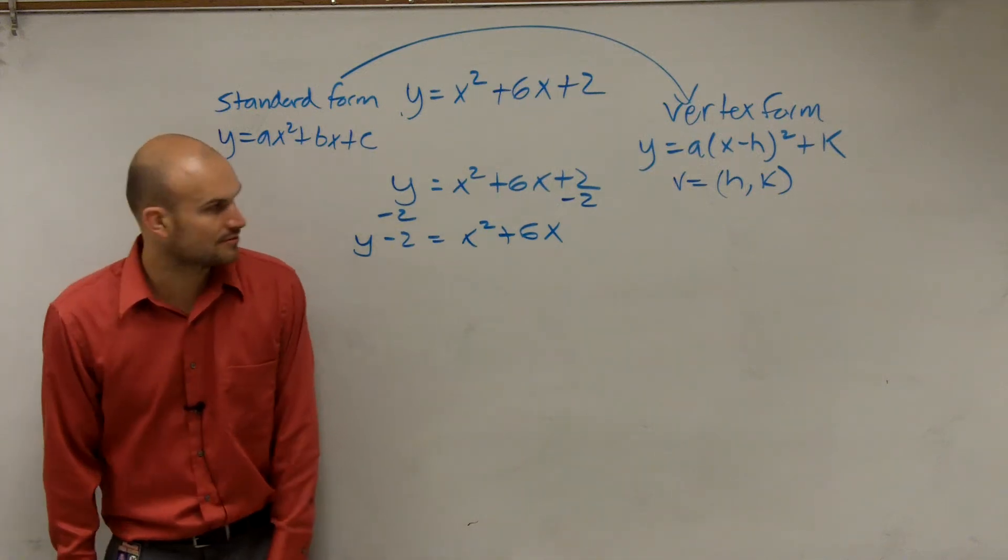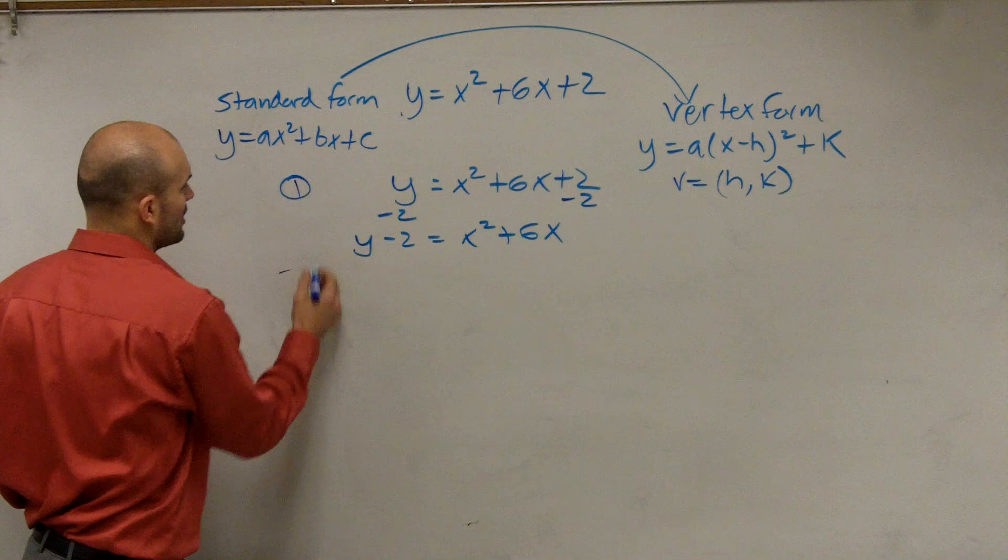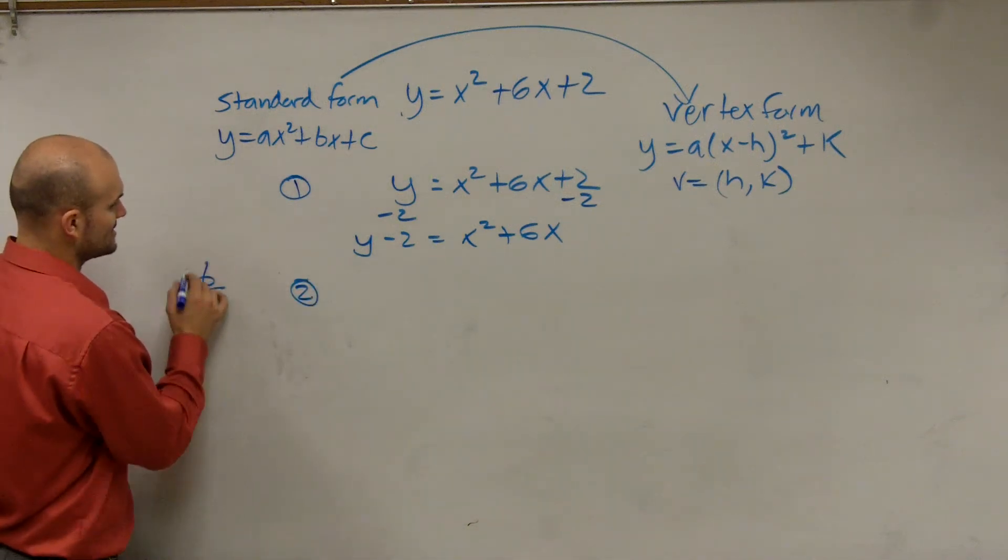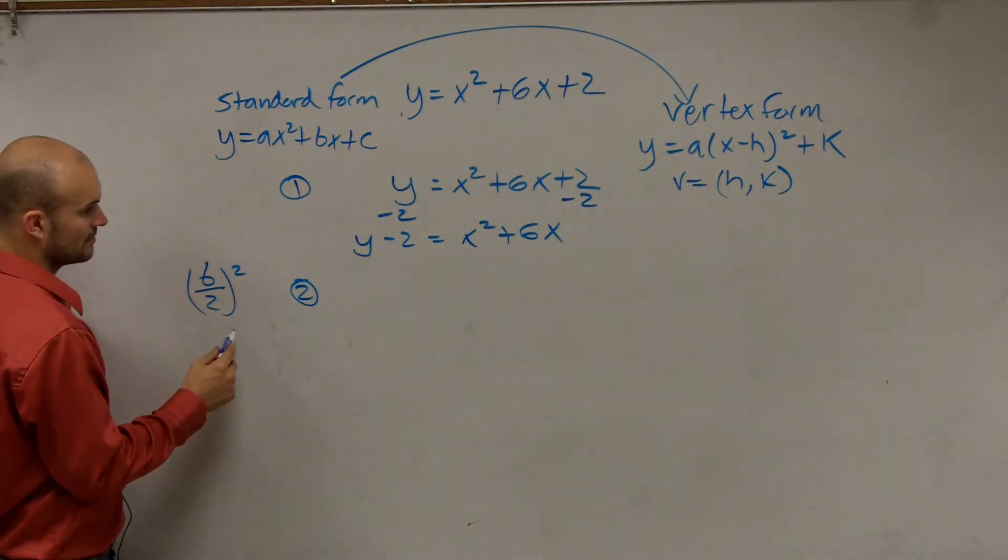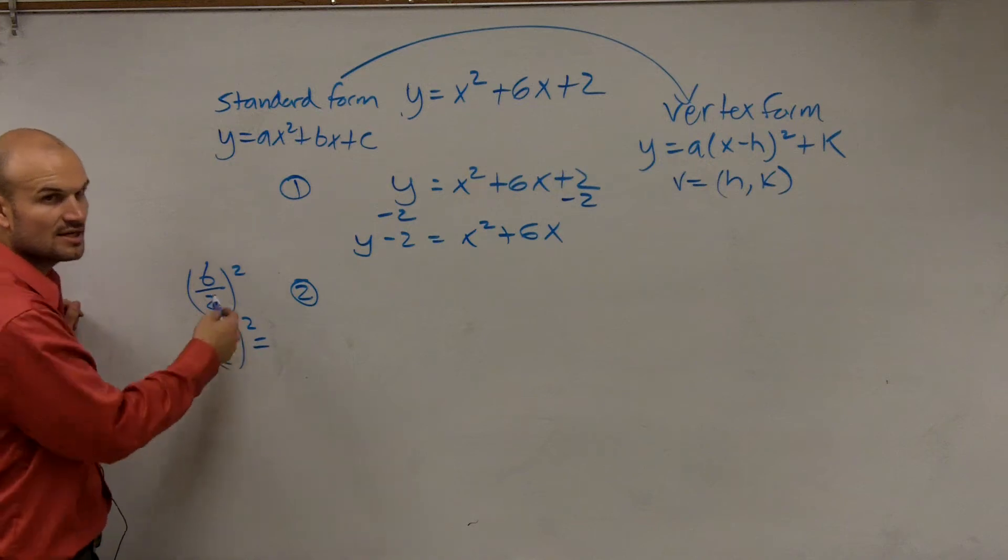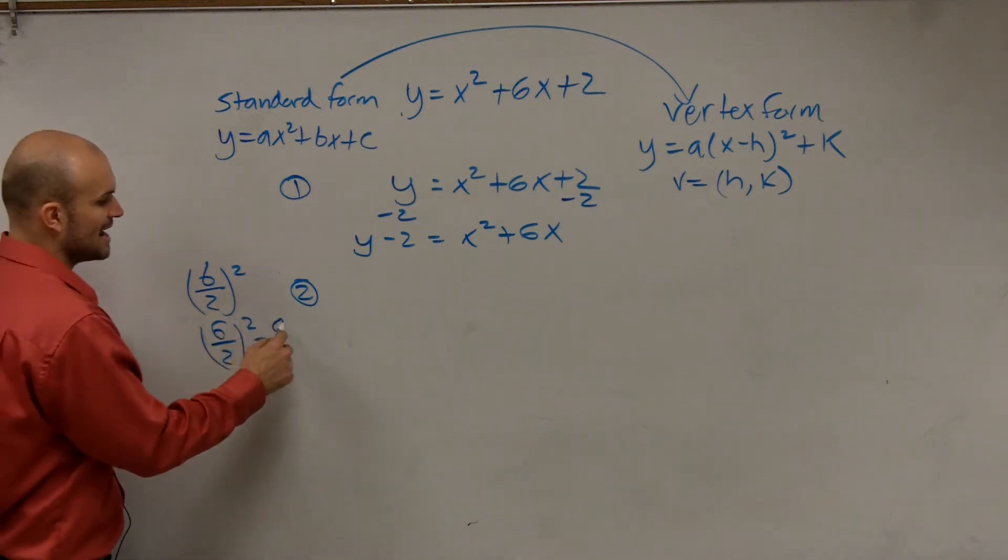Now, step 2. That's step 1. Step 2 is to take b, divide by 2, and square it. So 6 divided by 2, squared equals 6 divided by 2 is 3. 3 squared is 9.